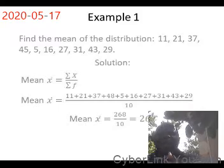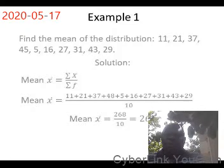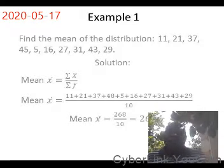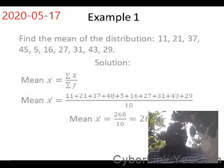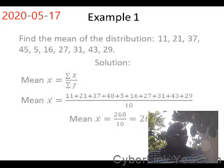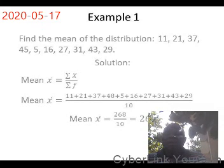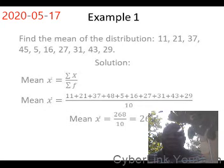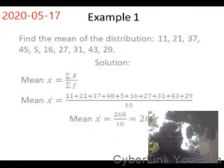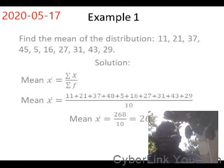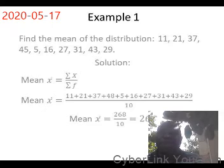Now let's take an example. Find the mean of the distribution: 11, 21, 32, 37, 45, 5, 16, 27, 31, 43, and 29.